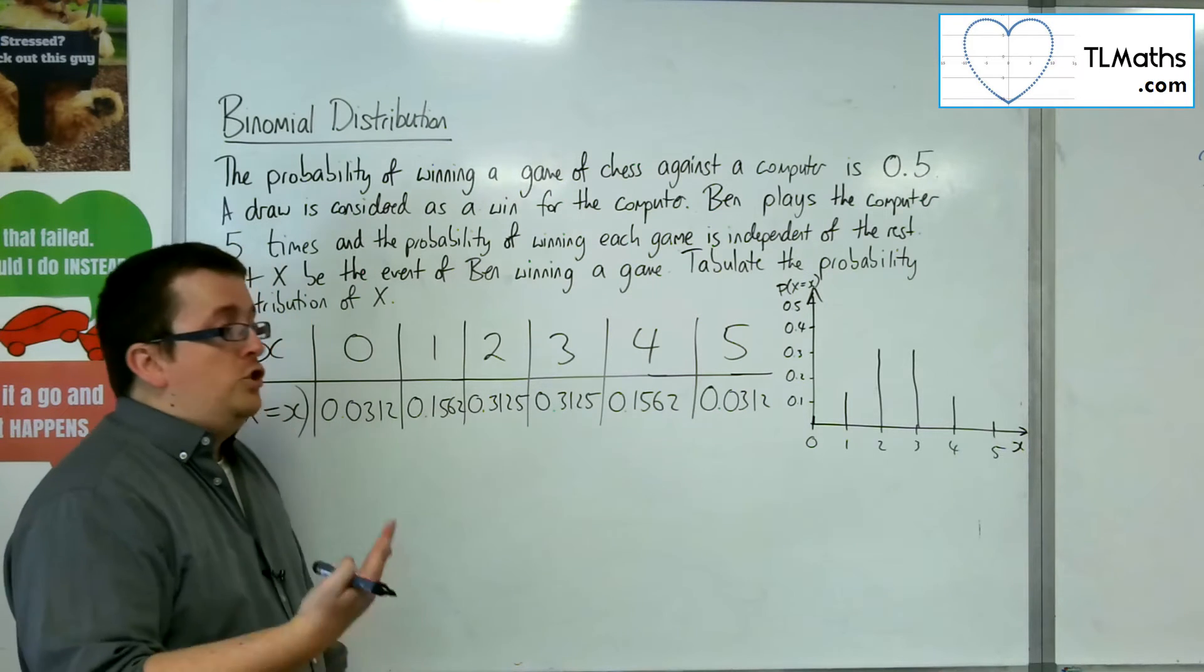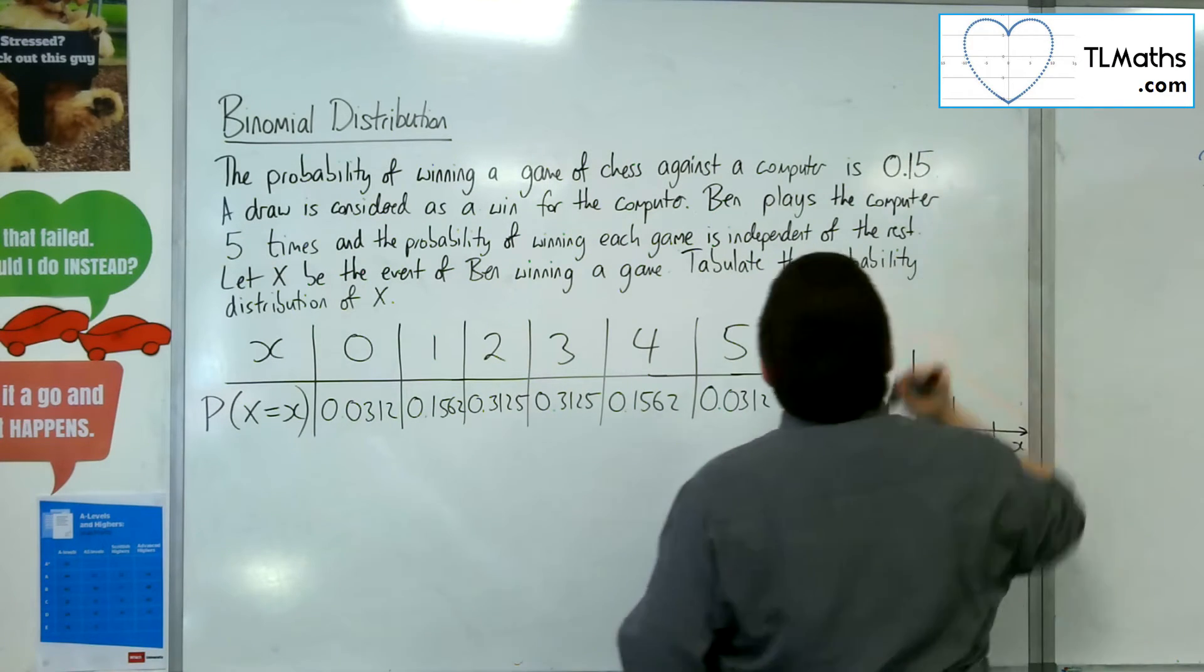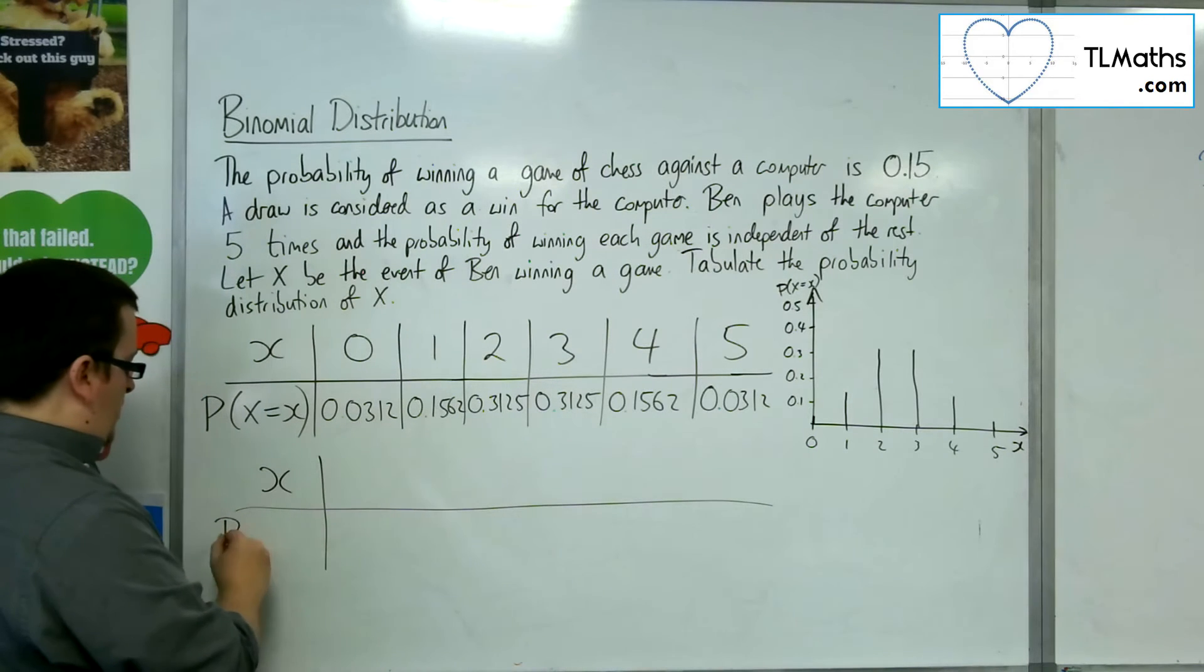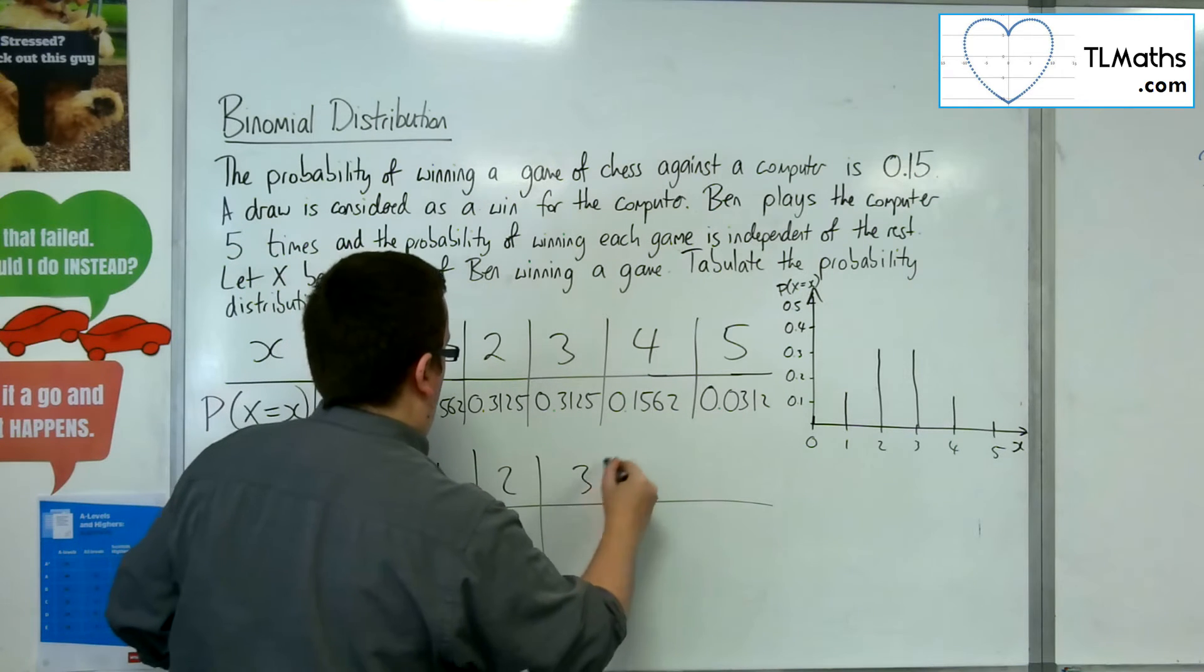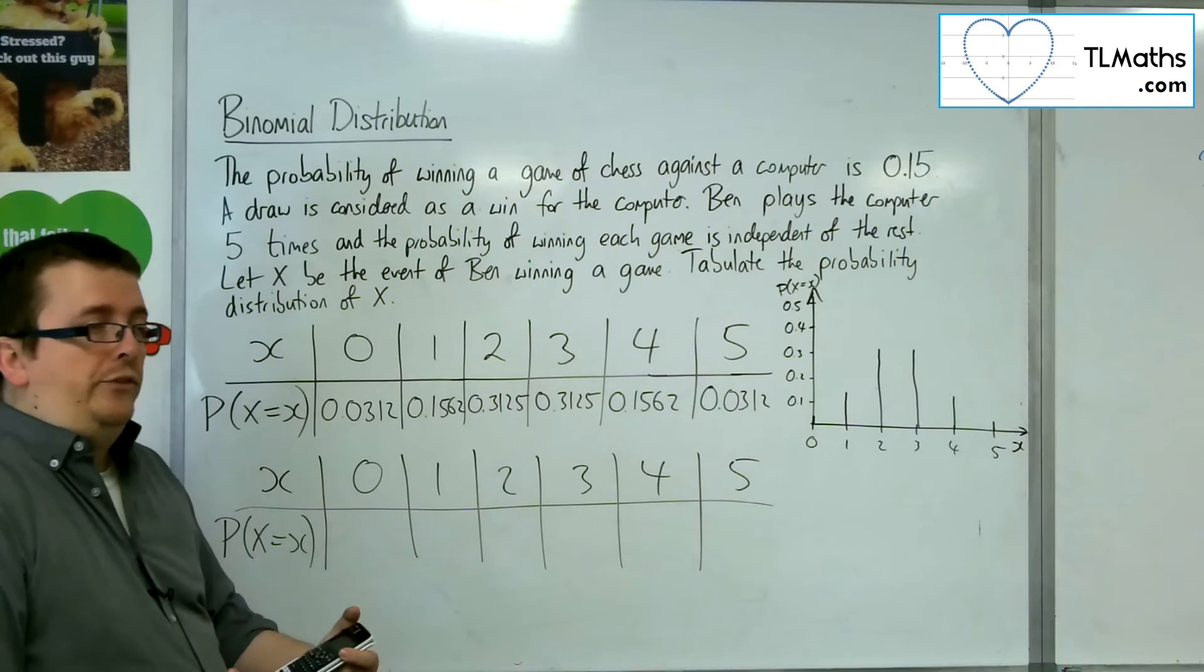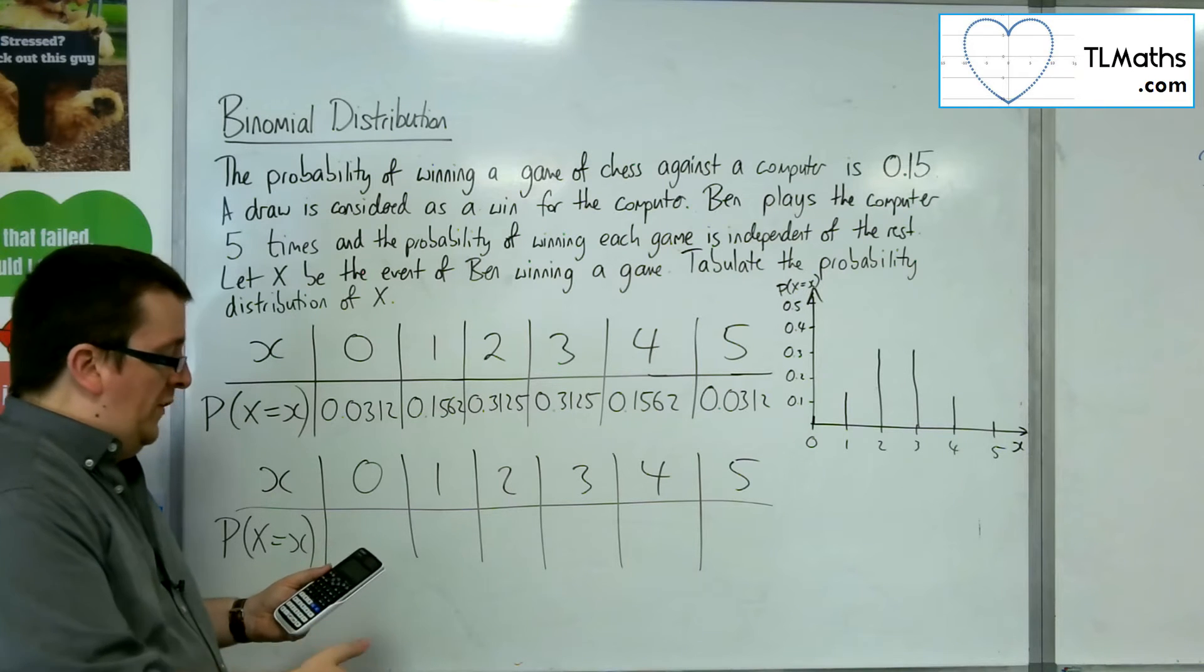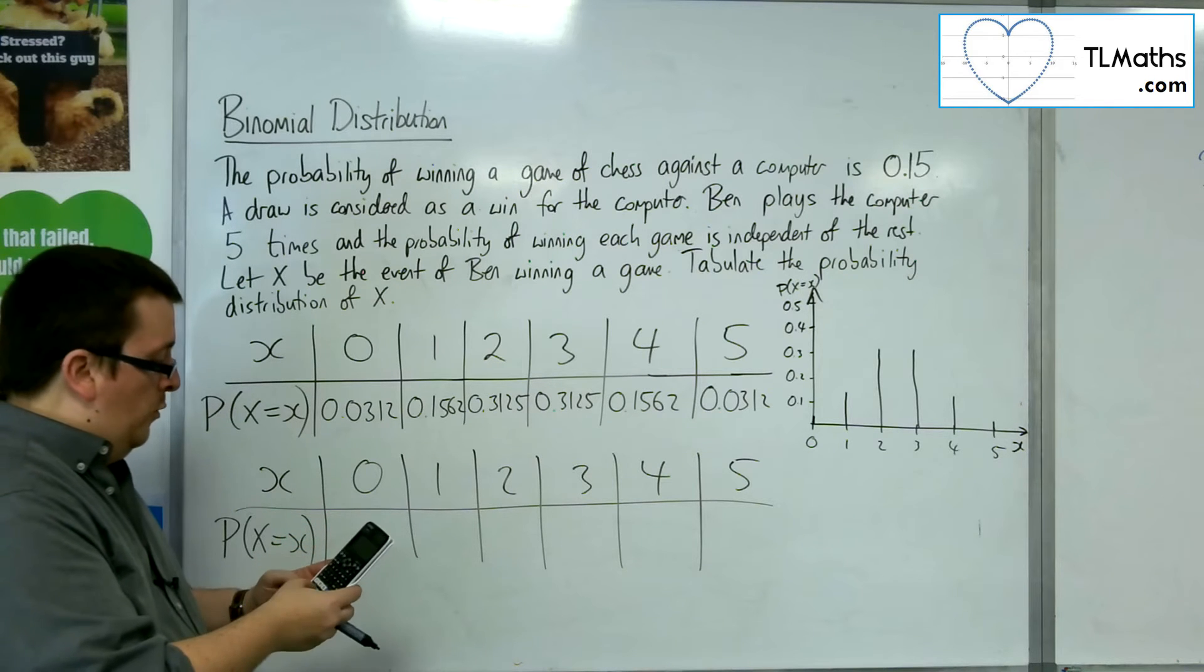So what we're now going to do is we're going to change it up. We're going to change that probability to 0.15. So if I change it to 0.15, I'm going to want a new table: 0, 1, 2, 3, 4, 5. And let's have a look at what this is going to look like. Maybe you can guess what the distribution is going to appear as. So if you've still got it on your calculator with that table, we can press equals again, go back in to change n to 5, and the probability is 0.15.